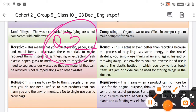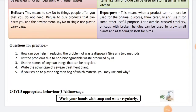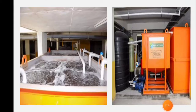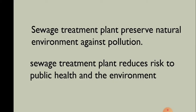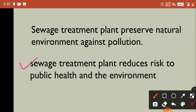Question 4: Write the advantage of the sewage treatment plant. Many societies have drainage water that is connected through drains to rivers, causing heavy pollution. For the sewage treatment plant, we can write: it preserves the natural environment against pollution; it reduces risk to public health and the environment; and it also helps protect aquatic life by keeping rivers clean and unpolluted.